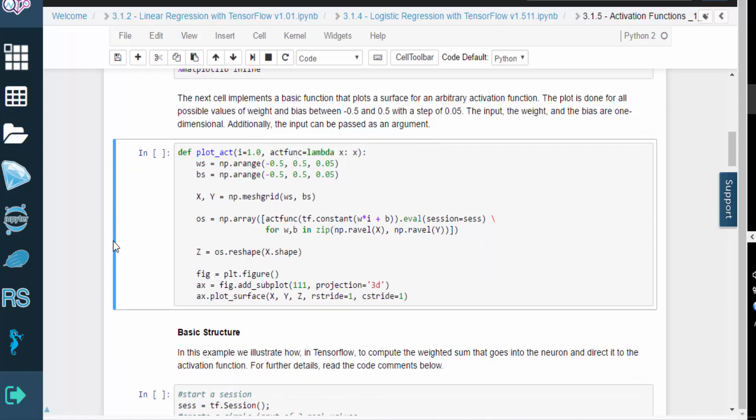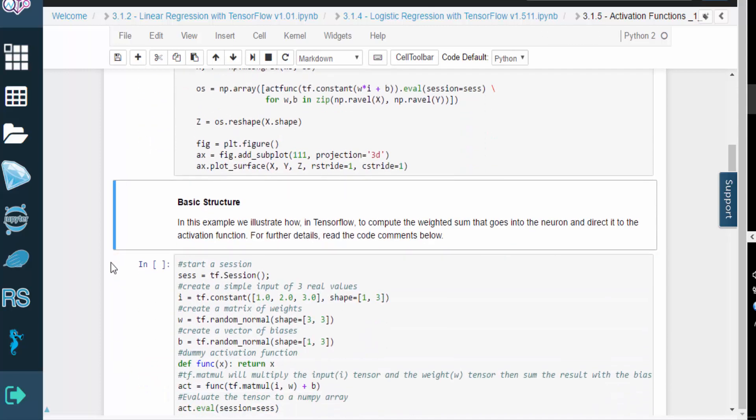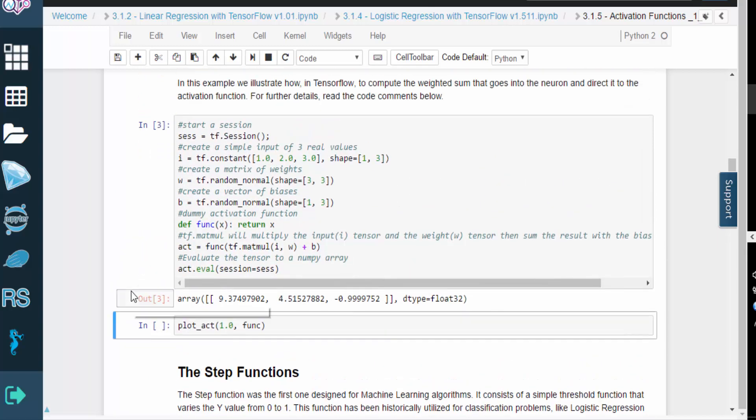The following piece of code contains a basic function that will plot the surface of an arbitrary activation function. The plot includes all possible weight and bias values between negative 0.5 and 0.5, with a step of 0.05. The input, the weight, and the bias are all one-dimensional. The input can also be passed to the function as an additional argument.